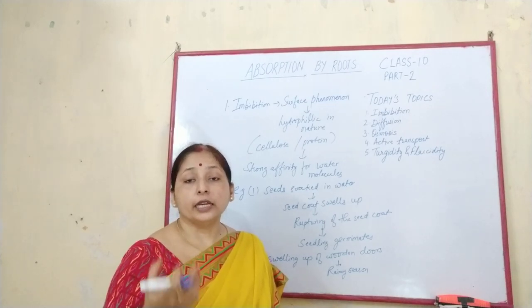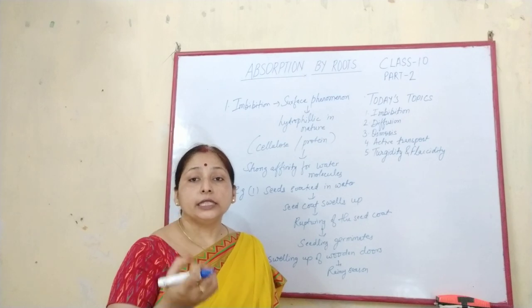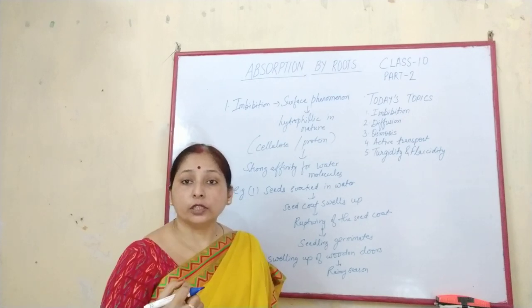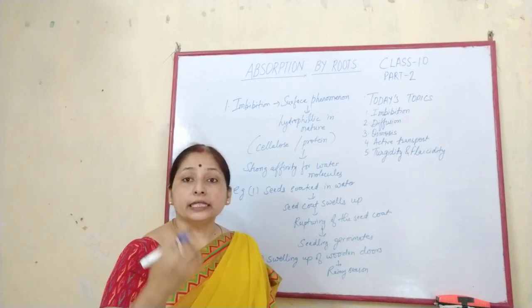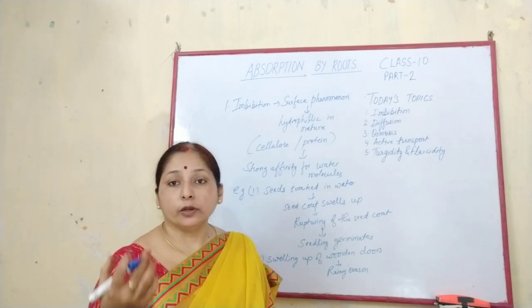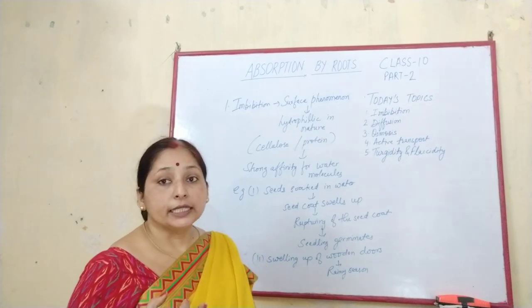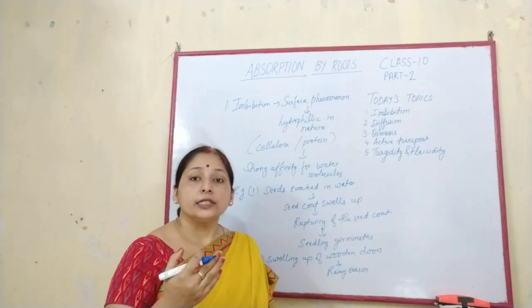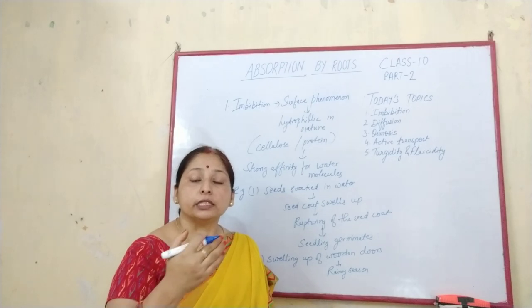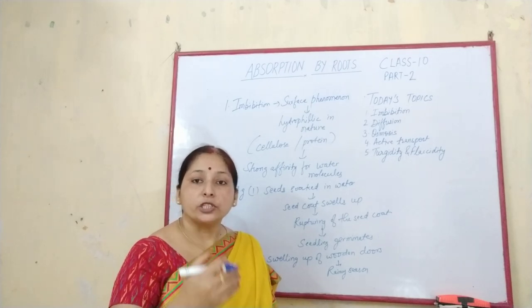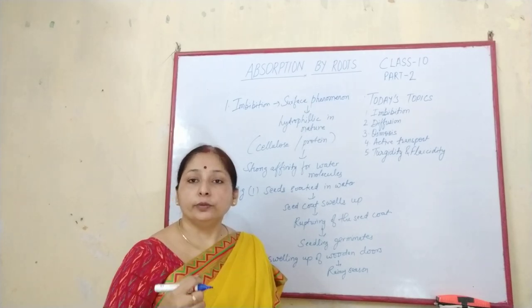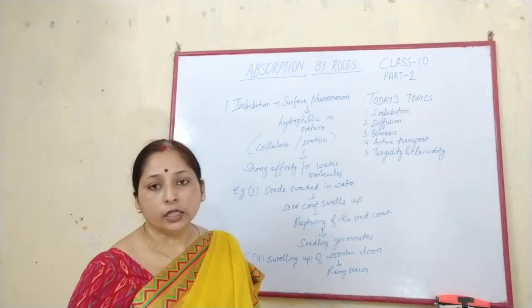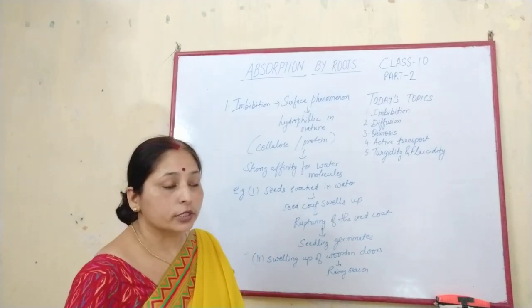Another example is wooden doors. Imbibition results in the swelling of the dead cells of a wooden door, which causes a disturbance or obstruction in the movement or the opening and closing of wooden doors.